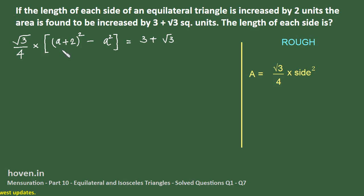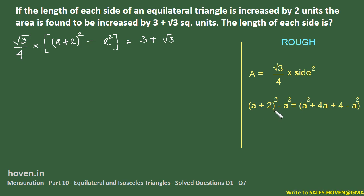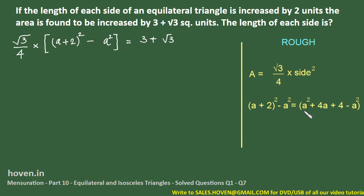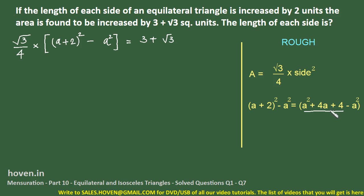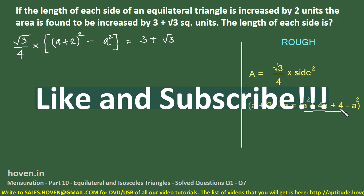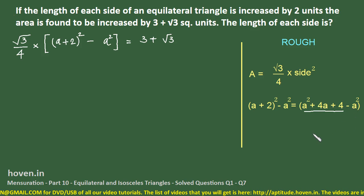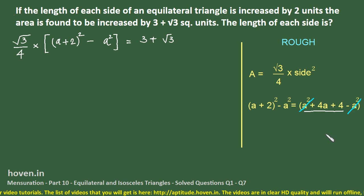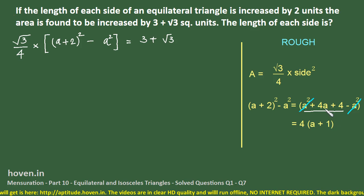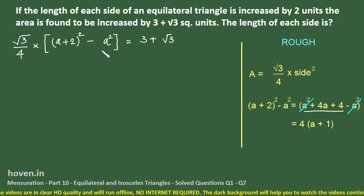We simplify the expression (a+2)² minus a². Expanding using (x+y)² gives a², plus the 2ab part which is 4a, plus the square of 2 which is 4, and then minus a². We can cancel the a² terms, leaving us with 4a plus 4, which is 4(a+1).